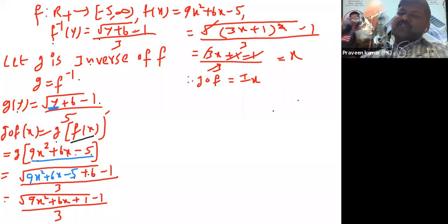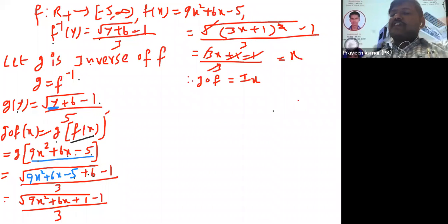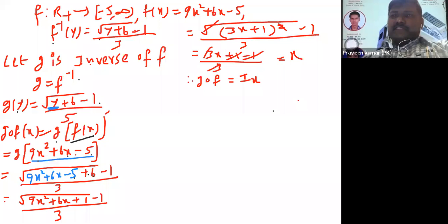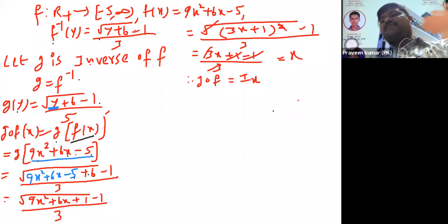Root of 9x squared plus 6x plus 1 is nothing but 3x plus 1 squared, so the square root cancels. The 3s cancel and the 1s cancel, giving x. Therefore g circle f is x.